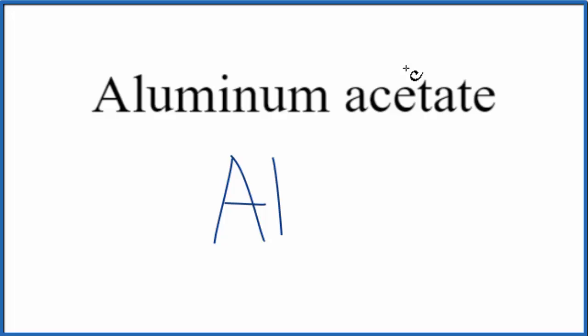And then the acetate, you won't find this on the periodic table. When you see something that ends in -ate, it's going to be a polyatomic ion. So in this case, with acetate, it's a polyatomic ion.